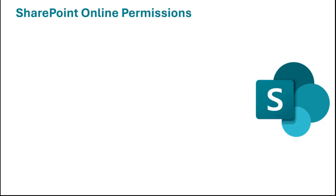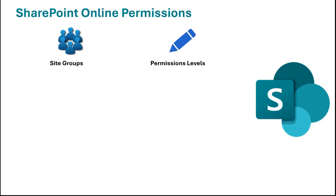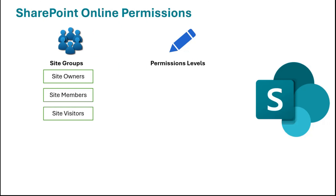In SharePoint Online, there are two components that construct SharePoint permissions: site groups and permission levels. When we create a SharePoint site — be it a team site or a communication site — by default we get three site groups: site owners, site members, and site visitors. These groups are used to categorize users.